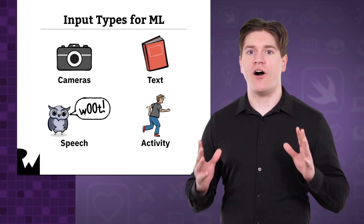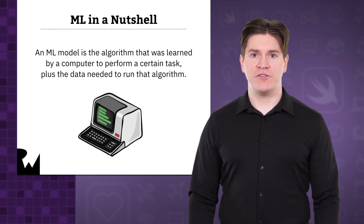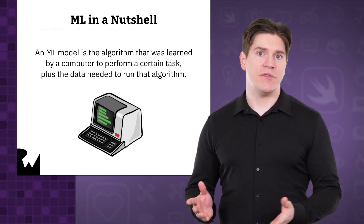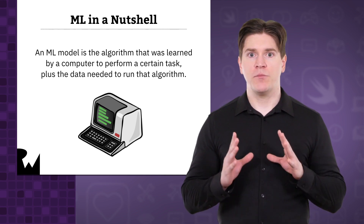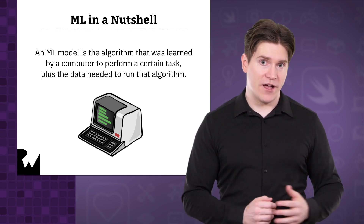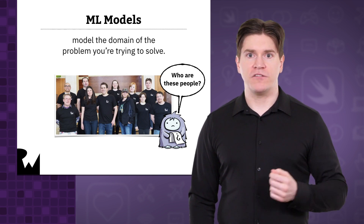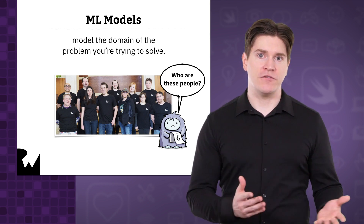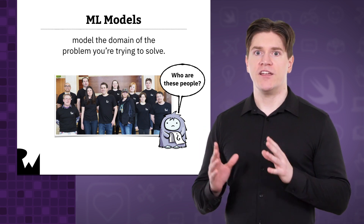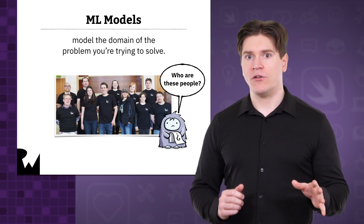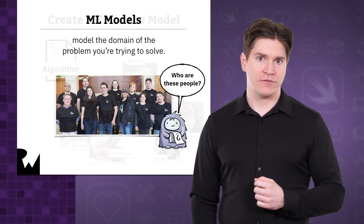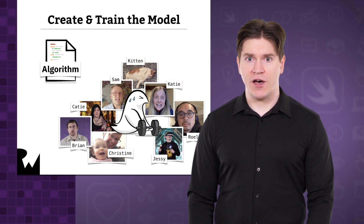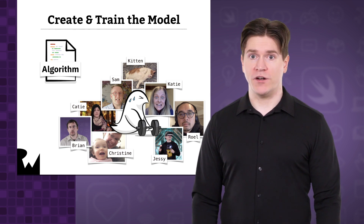The iOS SDK has all of these areas covered. A central concept of machine learning that we'll be focusing on is the model. An ML model is the algorithm that was learned by a computer to perform a certain task, plus the data needed to run that algorithm. It's called a model because it models the domain for the problem you're trying to solve. For example, take the problem of recognizing the faces of your friends in photos. To create the model, you first need to choose an algorithm, and then you need to train the model by showing it a lot of examples of the problem that you want it to solve.